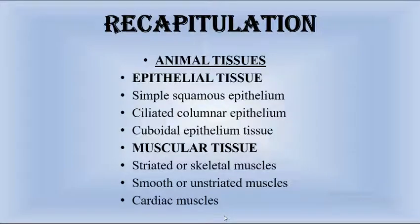In our previous class we started with animal tissues. We completed the first part, epithelial tissue, including simple squamous epithelium, ciliated columnar epithelium, and cuboidal epithelium. Apart from that, we learned about muscular tissue — three types: striated or skeletal muscles, smooth or unstriated muscles, and cardiac muscles.